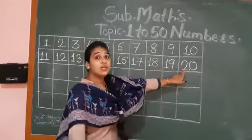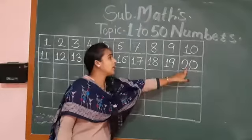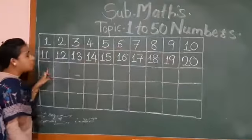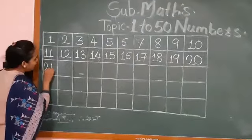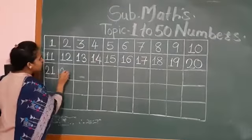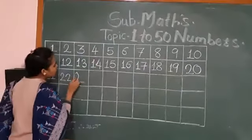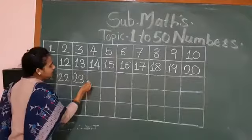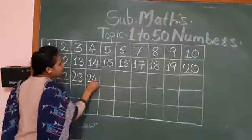Which number is it? Two tenths, twenty. After twenty, what will we write here? Two tenth one, twenty-one. Two tenth two, twenty-two. Two tenth three, twenty-three. Two tenth four, twenty-four.